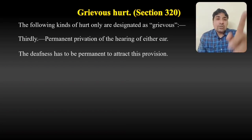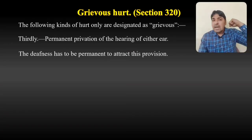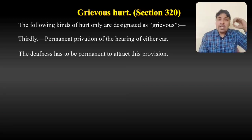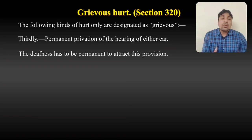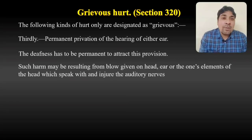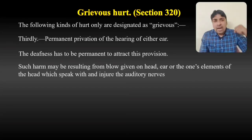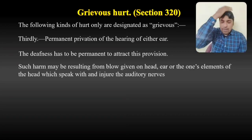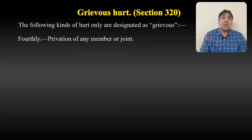The third type is permanent privation of the hearing of either ear. The deafness has to be permanent to attract this provision. If I punch someone on the ear with such force that their hearing is permanently damaged — they become permanently deaf in one ear — I will be liable for grievous hurt. Such harm may result from a blow given on the head, ear, or other elements of the head which injure the auditory nerve.